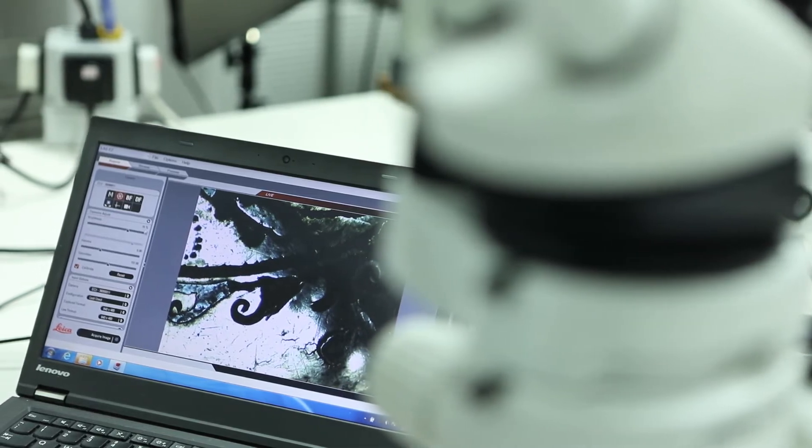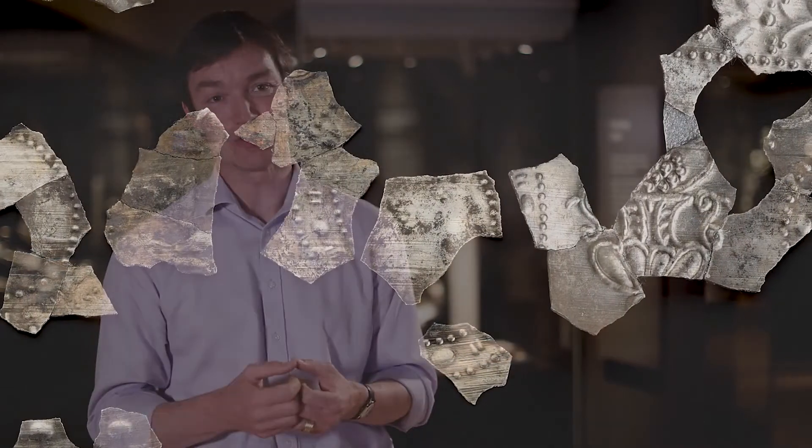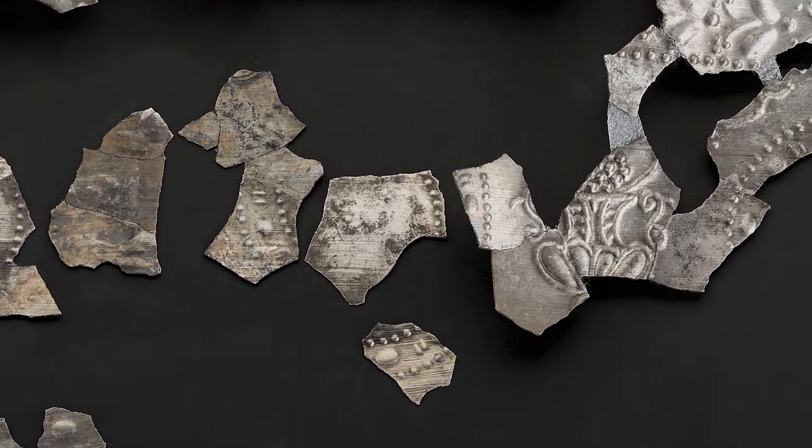This hoard was hacked twice, first in antiquity by the Romans and then by the plough. So after it was buried in Fife, the plough has smashed this silver into tiny, tiny fragments and we have had this devil's job to stick all these fragments back together again.